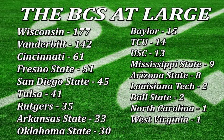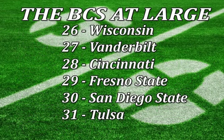Here are your BCS at-large teams — the unranked bubble teams, and here's how they got the votes according to the AP and USA Today. Wisconsin would have gotten in automatically as Big Ten champions, but because they received 177 votes, they'll get spot number 26. Moving down the line: Vanderbilt with 142 gets spot 27, Cincinnati gets 28, Fresno State is 29th, San Diego State will be 30, Tulsa will be 31. Rutgers had 35 votes and Arkansas State had 33, but because Arkansas State is a conference champion, they automatically get a berth and will get the number 32 seed, while Rutgers gets bumped out to the NIT.